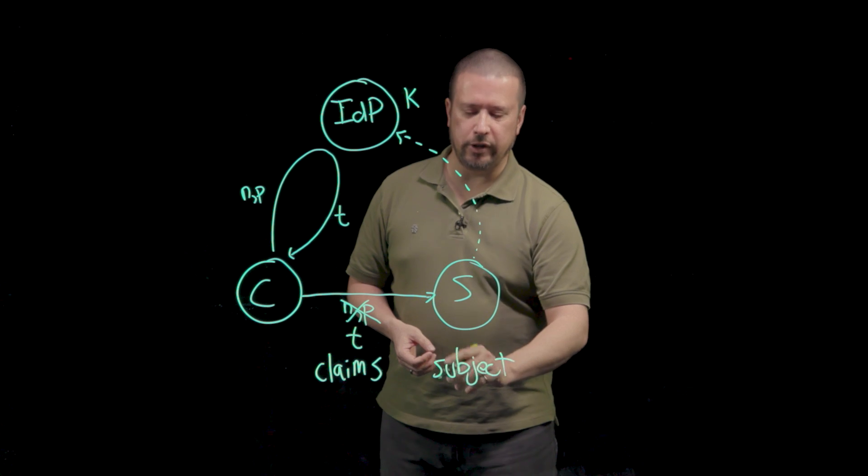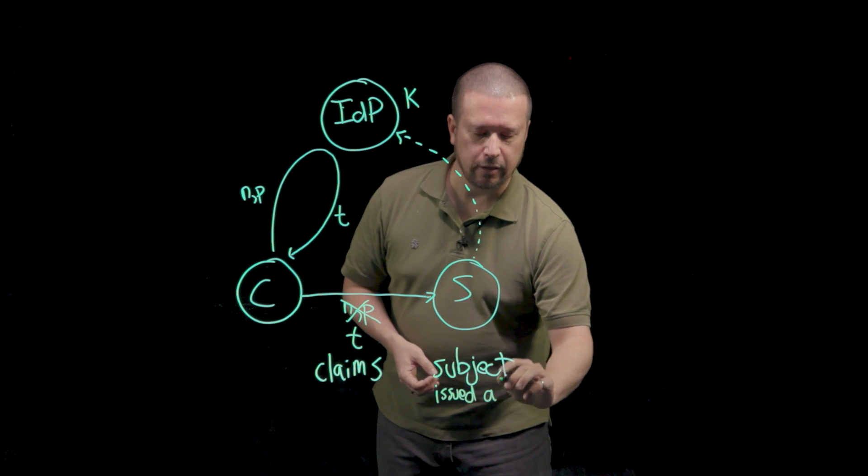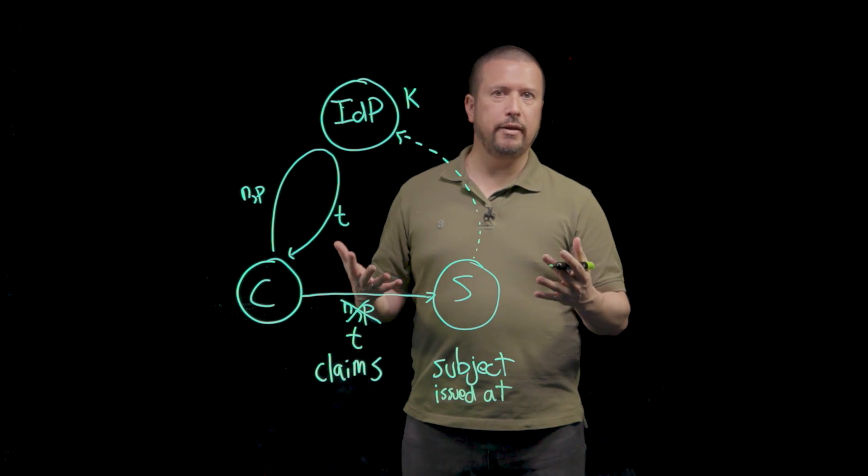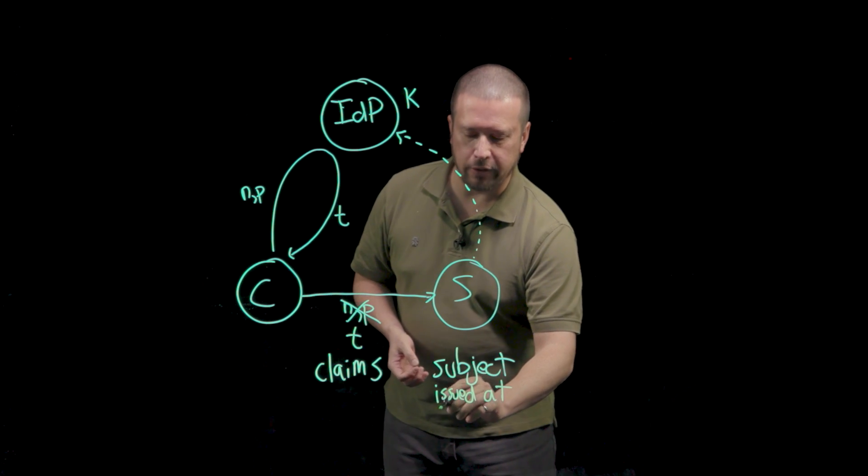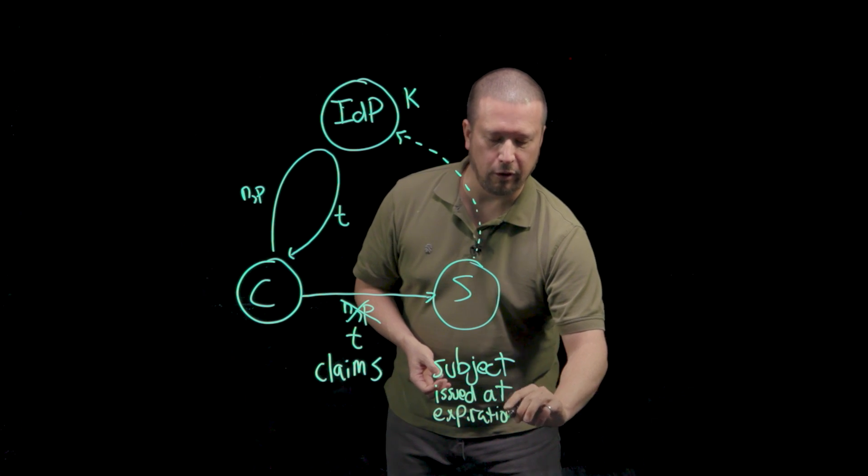Another claim that's really interesting or set of claims are things like the issued at claim, which talks about when the token was issued. Or the expiration, which says when the token is no longer valid.